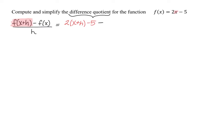Then we're going to subtract the next portion, which is just f of x — that's the original function, 2x minus 5. Be careful here: when we subtract 2x minus 5, we have to make sure it's in parentheses because there are two terms there. We want to make sure we subtract all of the terms of the function. Then the whole thing is divided by h.